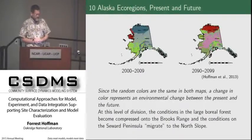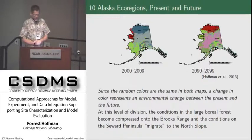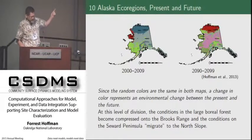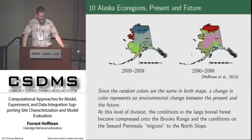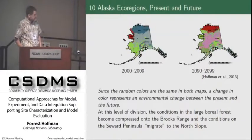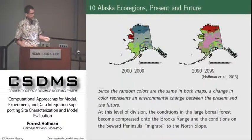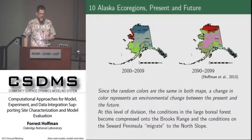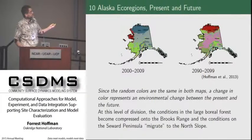The nice thing about this cluster analysis is that it does a very good job of partitioning up this 37-dimensional multivariate space. We can really capture the shifts in these gradients and understand at different resolutions or k-values how those gradients play out across the landscape. If we ask the clustering algorithm for 10 different regions or ecoregions, we get a figure that looks like this. But we've run both the present and the future through the same algorithm, so we can also pull out what the future looks like.